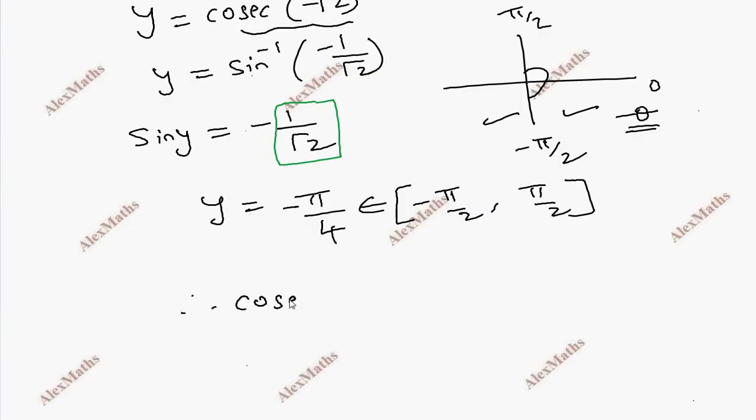Therefore, cosec inverse minus root 2 equals minus pi by 4.